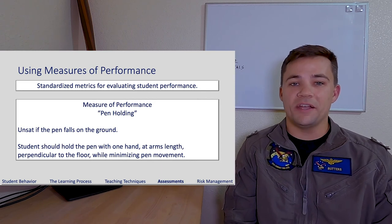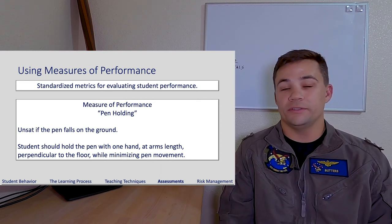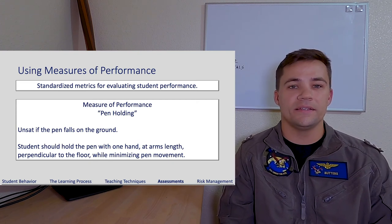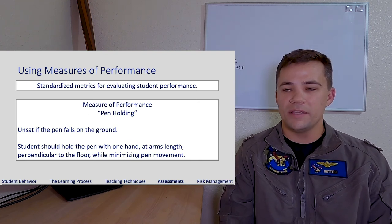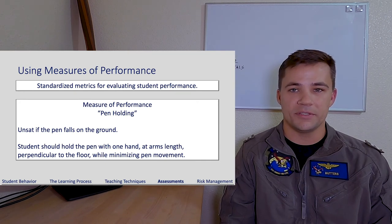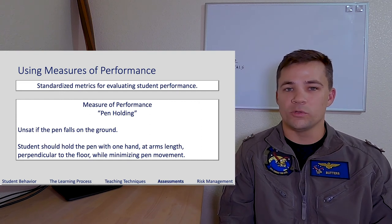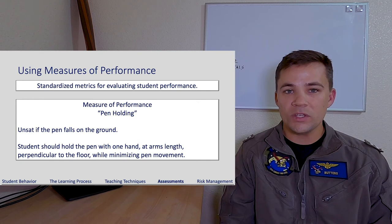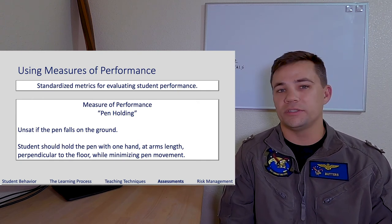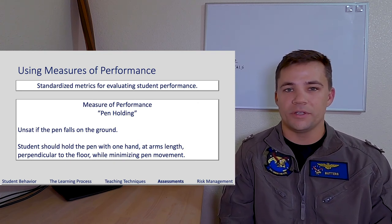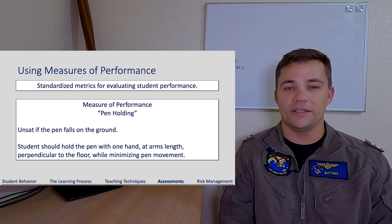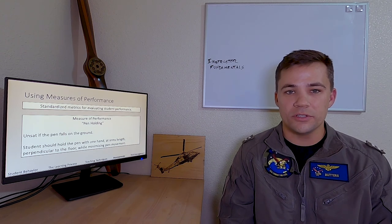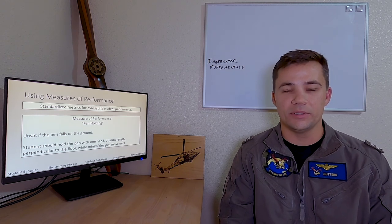That's where it can be useful to hold instructor standardization meetings for your squadron or command, where you discuss what your standards are for these things so that students receive consistent assessments throughout the syllabus — not having some instructors say 'good job' and then the next instructor, after the exact same performance, say 'that's not up to standards.' Those areas with room for interpretation in measures of performance are most often in areas where it's very hard to objectively measure performance, like section leadership or radio communications, where you want to be able to articulate to your student why you assessed their ability where you did.